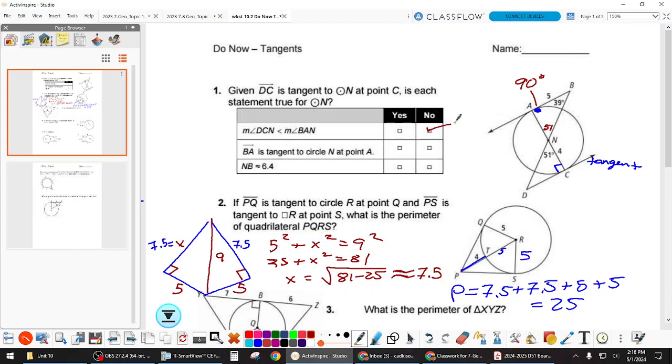Next one. BA is tangent. Is it? We know for sure it is now because we calculated the angle. So yeah, that's true. NB is approximately 64. How are you going to find NB? Draw this triangle in here. We're told this side is 5. We're trying to find NB. What is this side? 4 because of the radius. It's a radius, right? So get used to copying and pasting those radiuses all throughout your picture. So we have 5 squared plus 4 squared, so it's 25 plus 16. So this is the square root of 41, which is roughly 6.4.